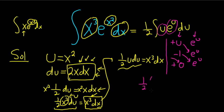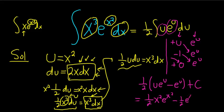So we have 1 half, parentheses, u e to the u, minus e to the u, plus c. The last thing we can do is replace u with x squared. So this is 1 half, x squared, e to the x squared, minus 1 half, e to the x squared, plus c.